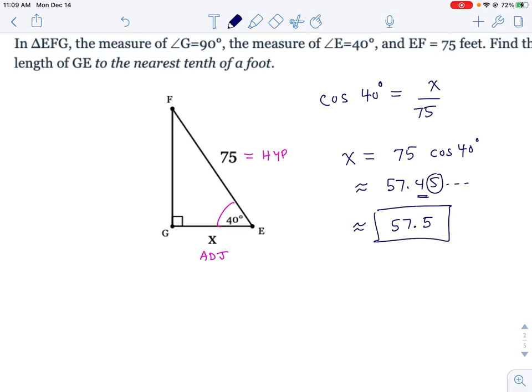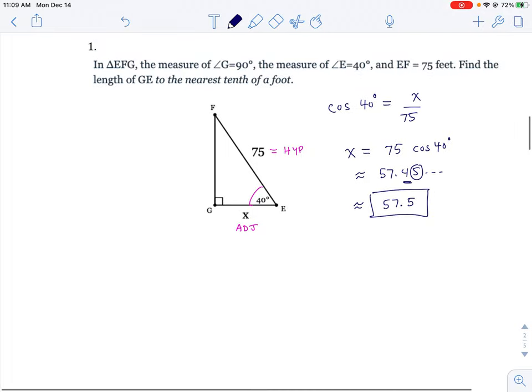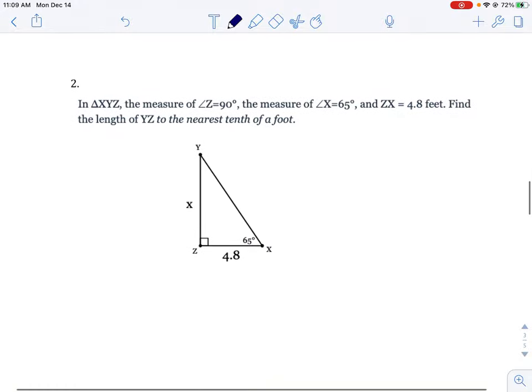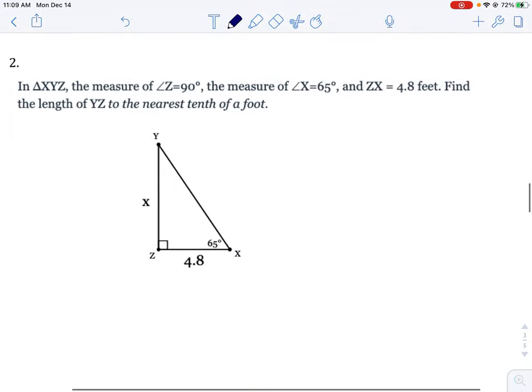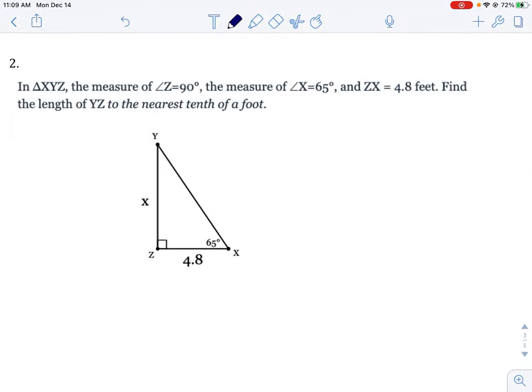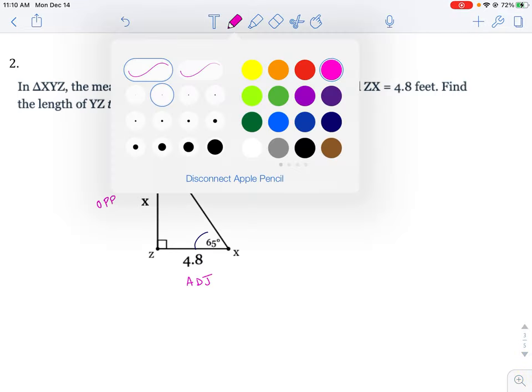Okay, there it is. Nearest tenth is what they're looking for. Let's look at another one like this. Again, I'm giving a 90. They gave me the angle is 65. If I label the sides, the unknown x is across from the angle and 4.8 is adjacent.